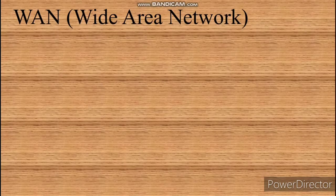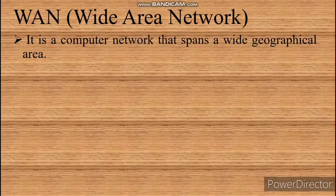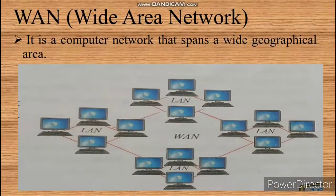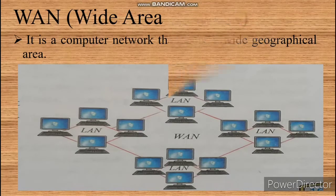The next type of network is WAN. The full form of WAN is Wide Area Network. It is a computer network that spans a wide geographical area. A WAN may be spread across cities, countries, or continents. A WAN is formed by connecting various LANs and MANs. The internet is the best example of a WAN.